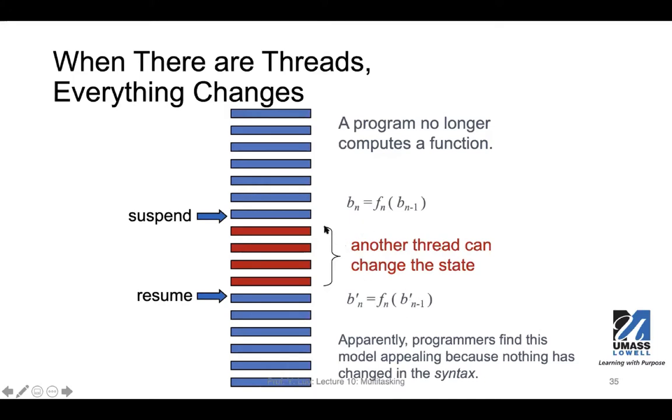That means when thread 1 resumes execution, it's not Bₙ₋₁—it's possibly that becomes B prime N minus 1. So this state here, this input variable here, is now different because the injection or interference will interleave the concurrent execution of another thread. That's where we see the complications come from.